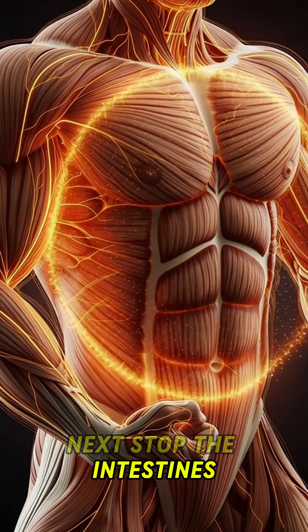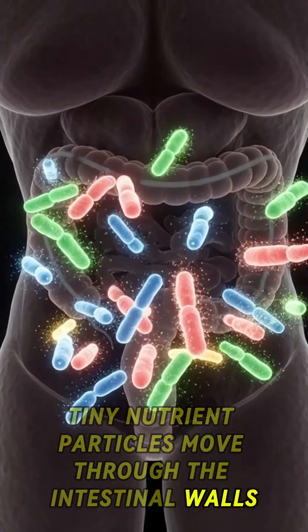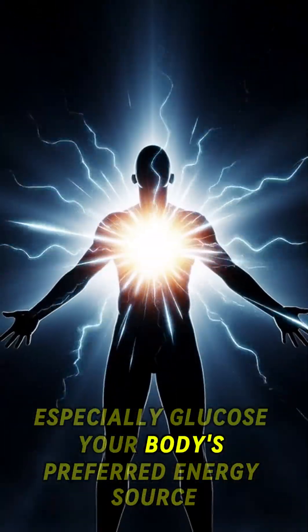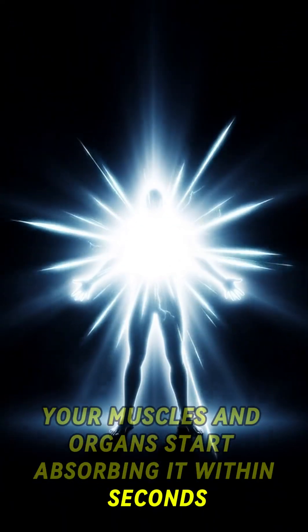Next stop, the intestines. Tiny nutrient particles move through the intestinal walls and enter your bloodstream. Especially glucose, your body's preferred energy source. Your muscles and organs start absorbing it within seconds.